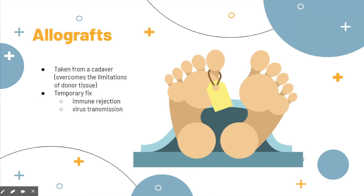Another type is allografts, which are taken from a cadaver. This helps overcome any limitations of donor tissue because cadavers can be used as needed since they're frozen. These help revascularize the wound by providing a barrier and promoting angiogenesis. They also provide growth factors and essential cytokines to speed up the healing process. However, it creates only a temporary cover, because it is another person's body, so there is always a chance of immune rejection or virus transmission. Allografts are typically followed by autografts.